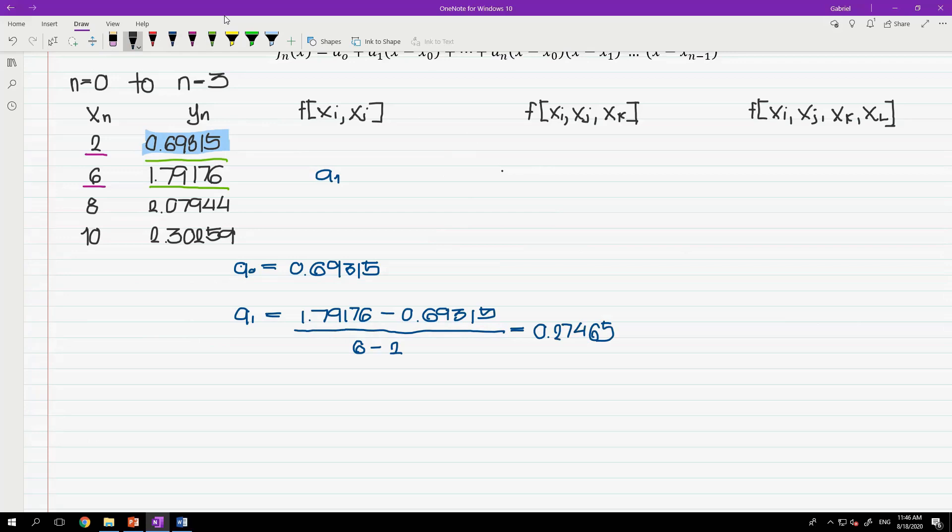Let's now rename the other parts of the column as variable b and c. Then, to determine the value of b, we will continue the pattern we use. So it is equals to the difference of these terms divided by the difference of these terms. So b is equals to 2.07944 minus 1.79176 all over 8 minus 6. And that is equals to 0.14384.